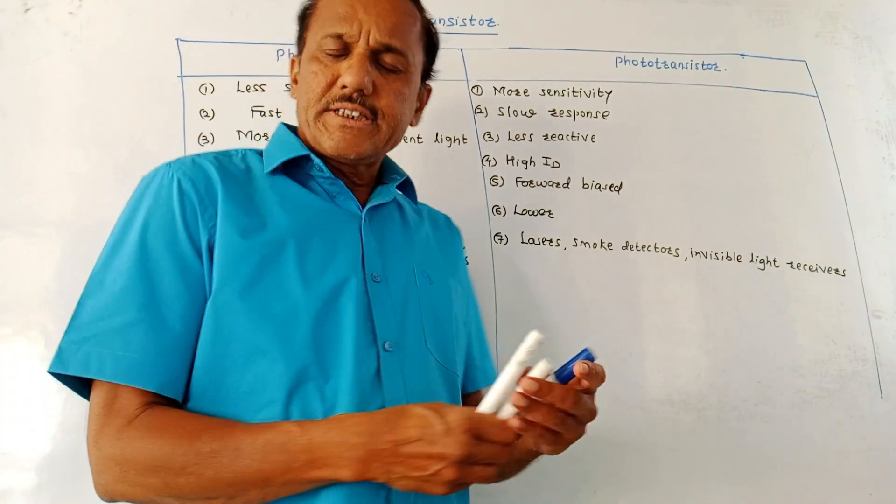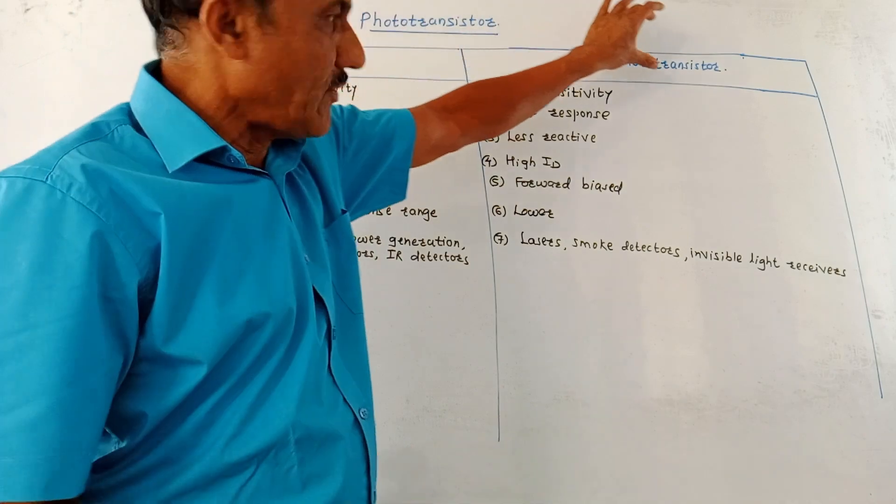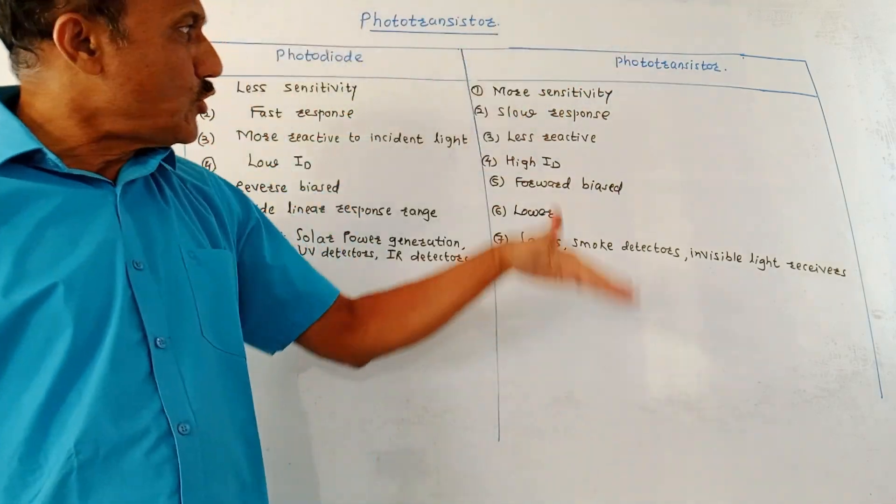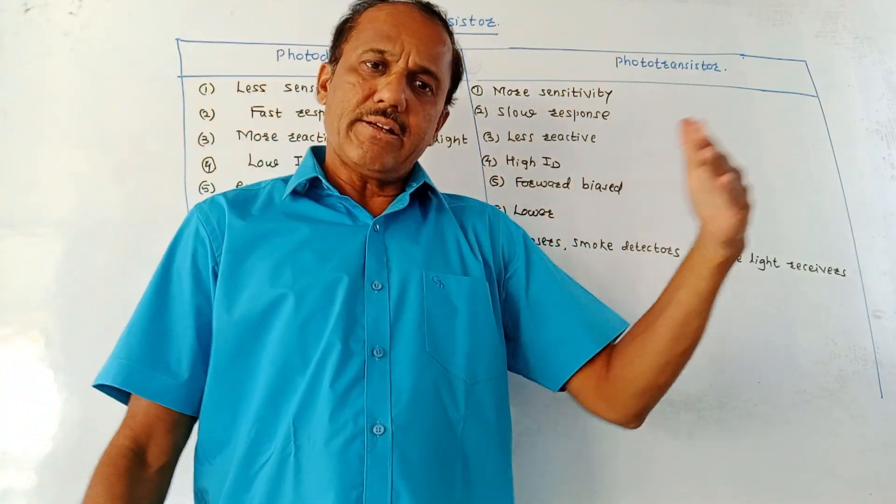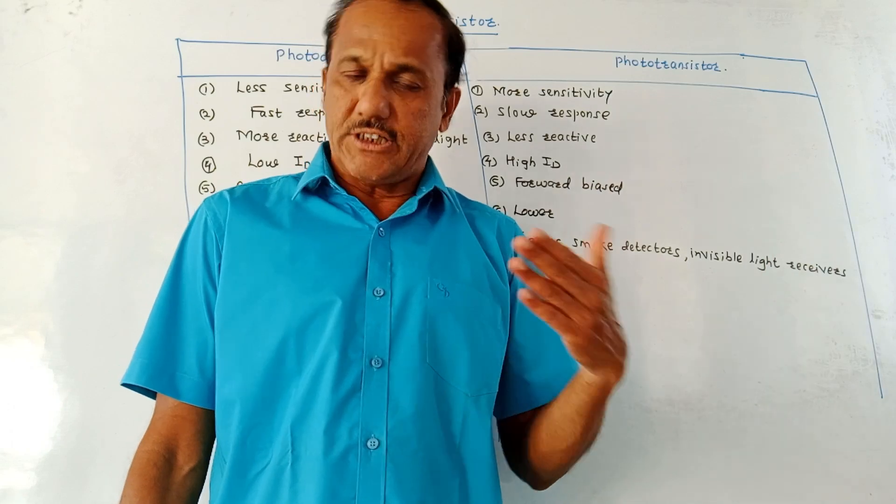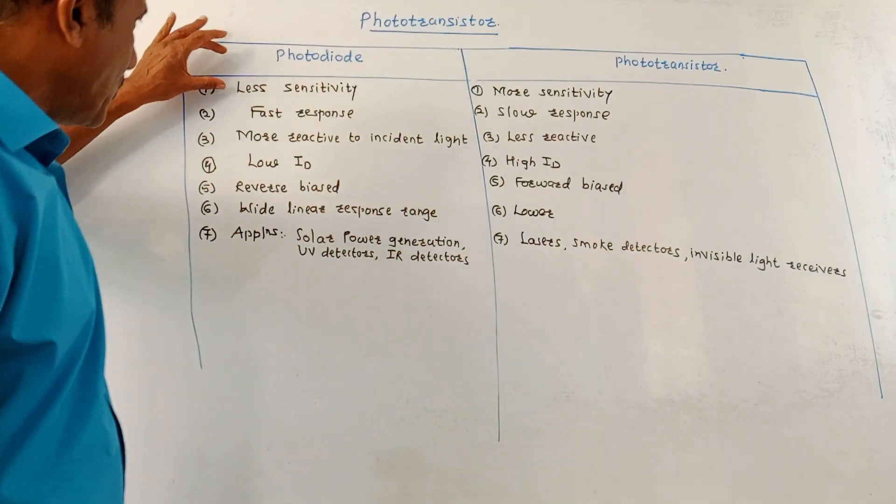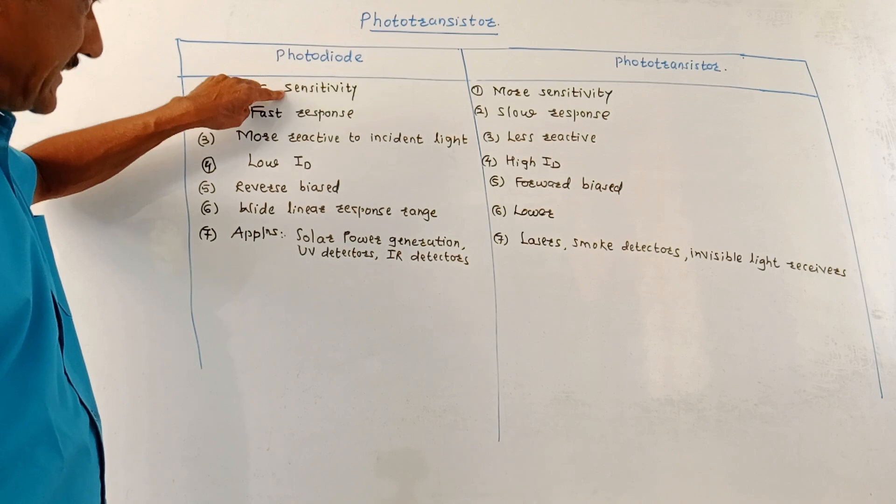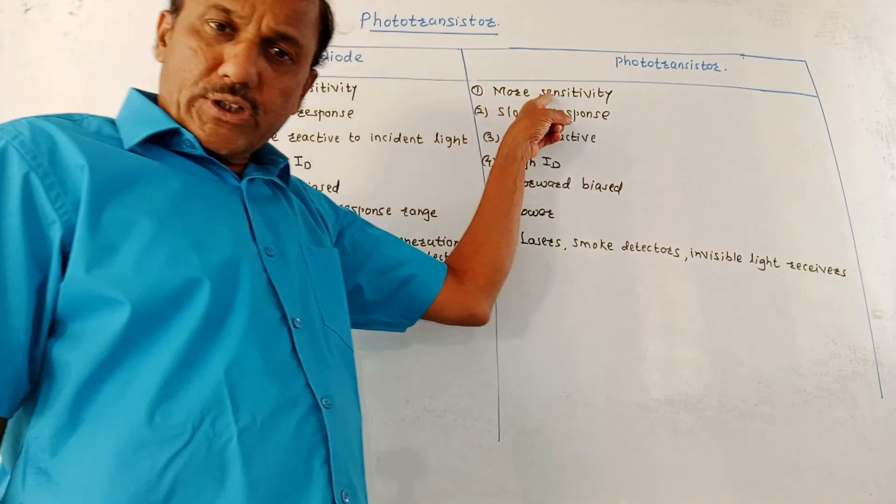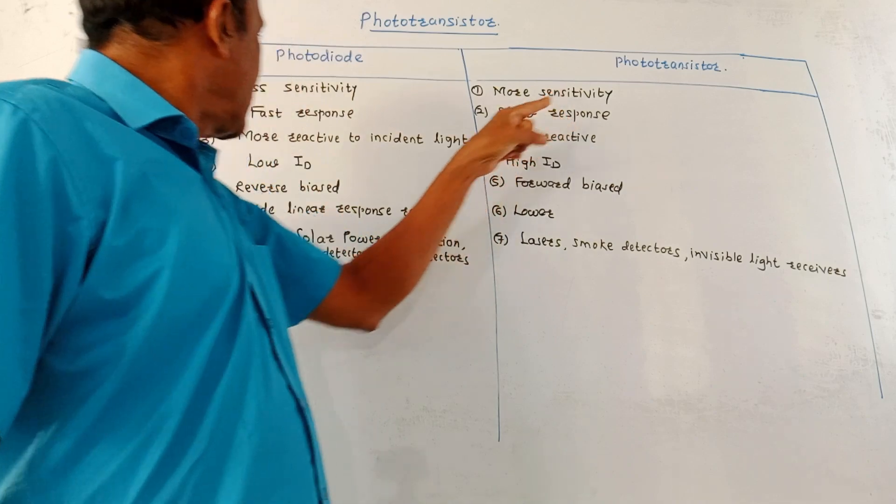Now, let us discuss comparison between photodiode and phototransistor. These points you can well use it while writing the advantages as well as disadvantages. First point of comparison is photodiodes are less sensitive, having less sensitivity. Phototransistors are having more sensitivity.